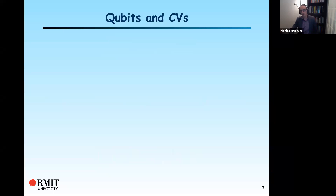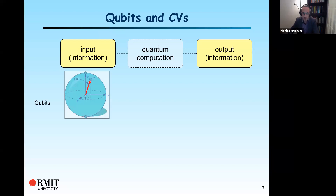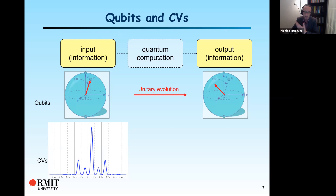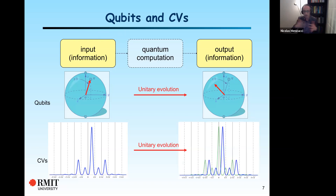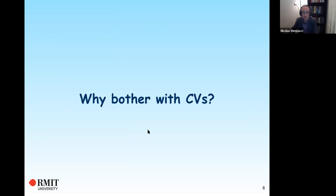With computation of any sort, we have an input and we have an output, and in between we do something. With qubits, you start in the Bloch sphere and unitarily evolve it to some other state. The equivalent in continuous variable quantum computing is that you take a wave function and controlledly evolve it to a new wave function. As long as you can implement any unitary evolution on multiple modes, we call that quantum computing with continuous variables.